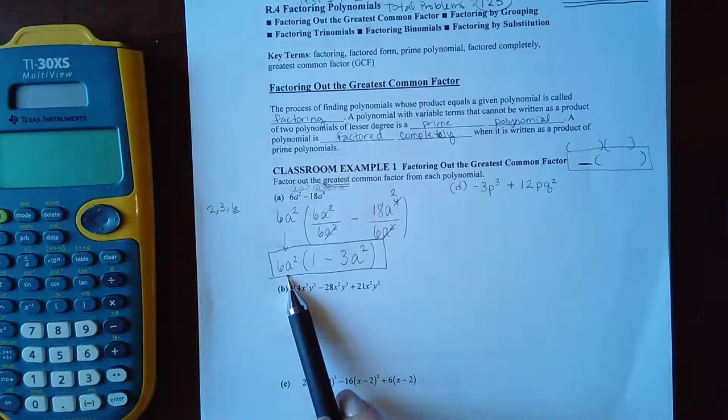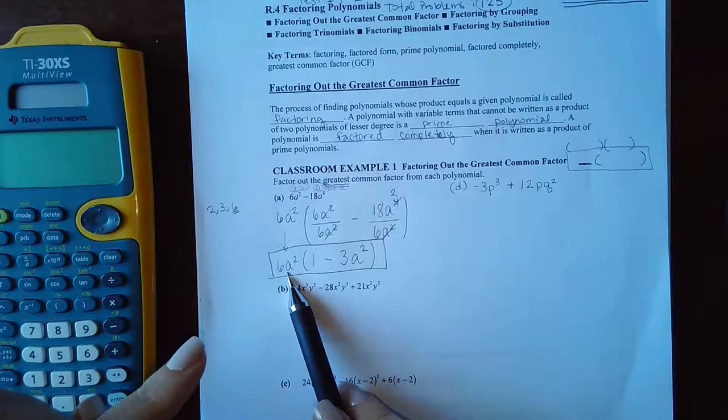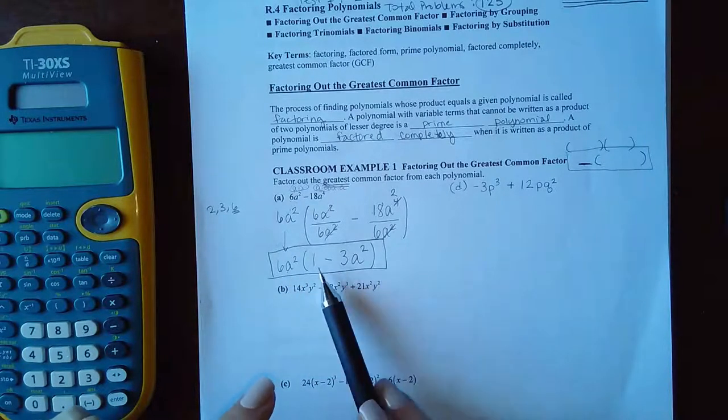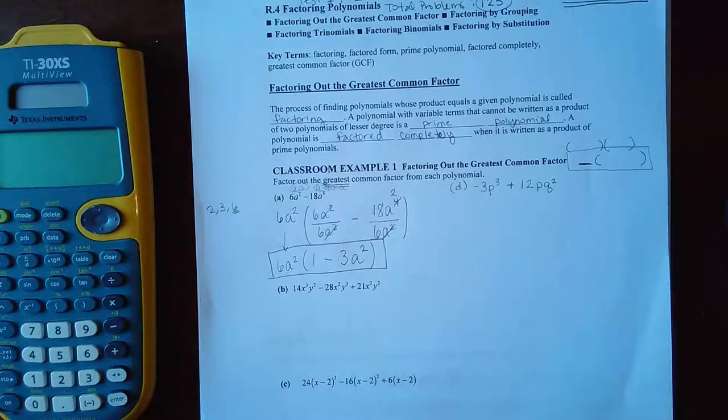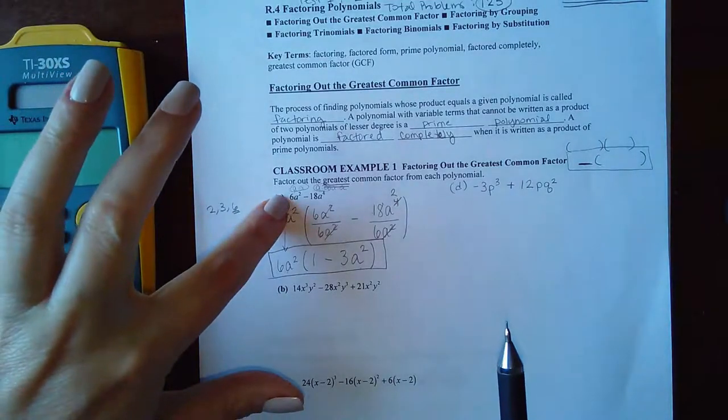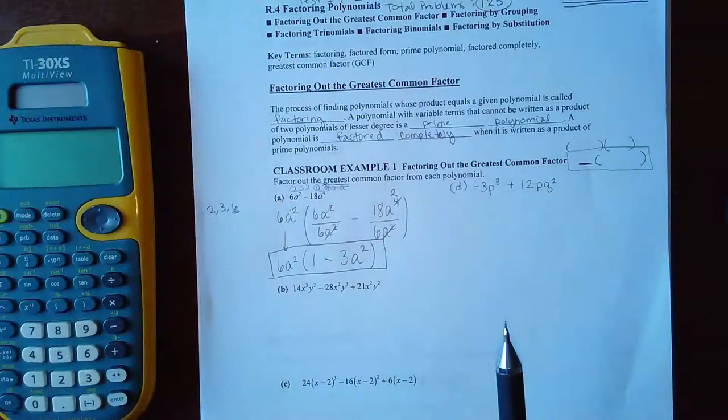This is the answer that they're looking for. The monomial, or the greatest common factor that I factored out, times a polynomial, which in this case is a binomial. And if I were to multiply these two things together, this monomial times this binomial, I should result in the polynomial that I was given to begin with.